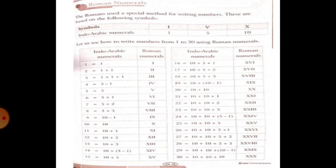The Romans used a special method of writing numbers. These are based on the following symbols. The symbols are: in Indo-Arabic numerals we represent 1, 5, and 10. So 1 is represented by the symbol I, 5 is represented by V, and 10 is represented by X.